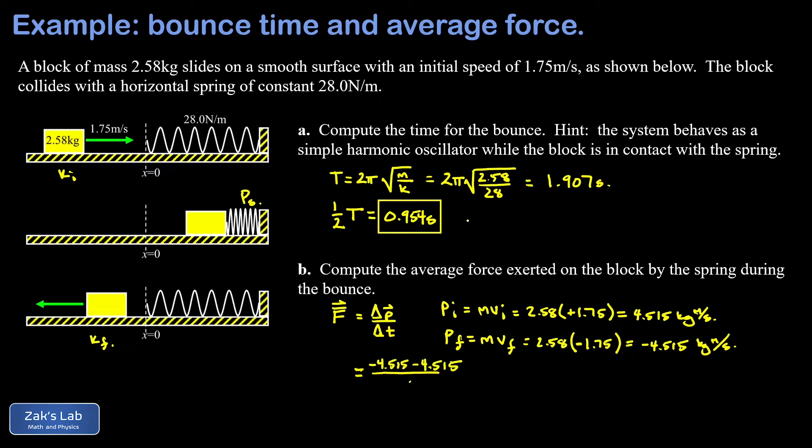When we run the numbers on this to three significant digits we get negative 9.47 newtons for the average force, and we're done.